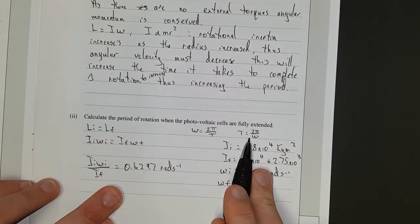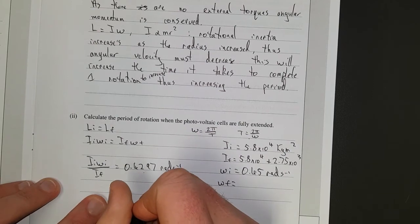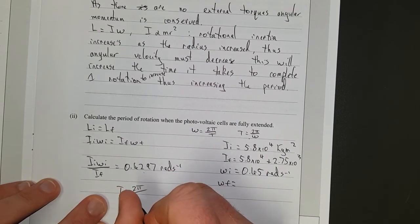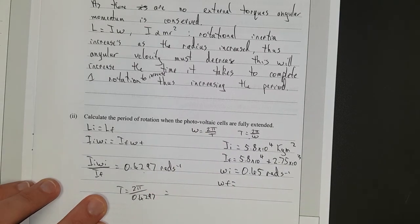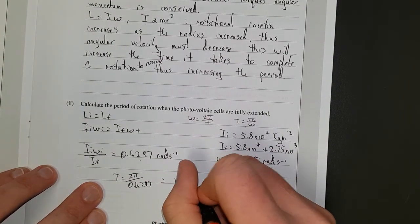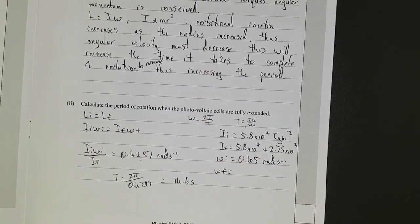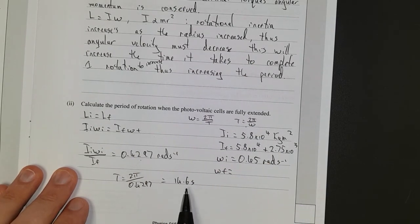Putting that into T = 2π/ω: the period equals 2π divided by 0.4297, which equals 14.6 seconds. I've answered the question to 3 significant figures.